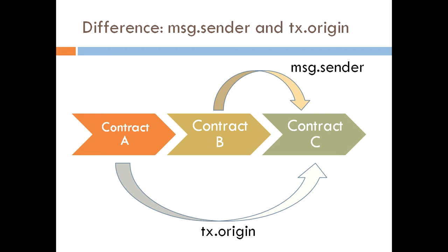Let's take the example shown in this slide. Suppose you have three contracts: contract A, contract B, and contract C. Contract A is calling contract B, and contract B is calling contract C. When you need to know in contract C who called it, the actual caller is B. So message.sender will give you the address of contract B, which is calling contract C. But if you use transaction.origin, the transaction originated from contract A, not B — so transaction.origin will give you the address of contract A.